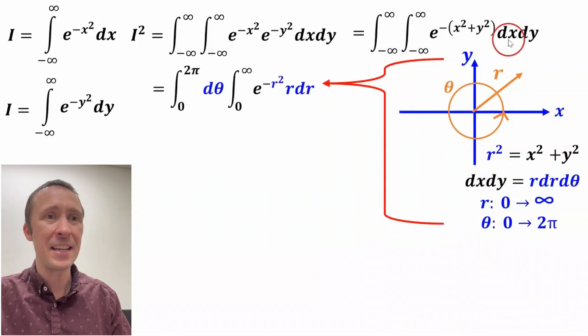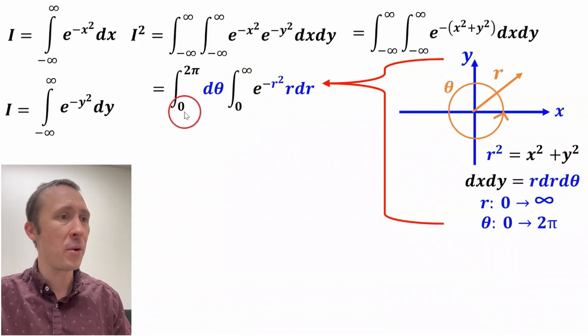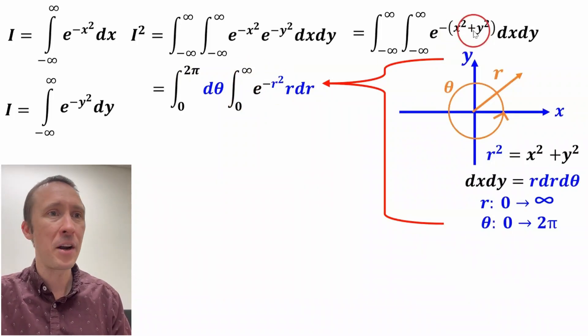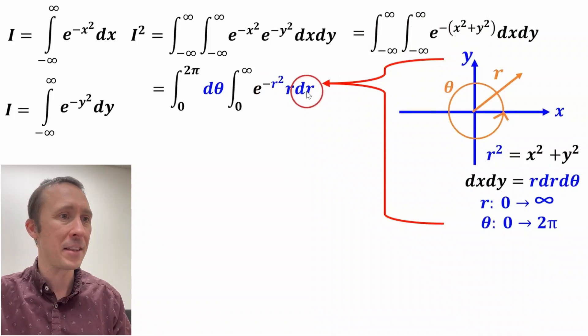So if we rewrite this integral of x and y in terms of theta and r, this is what we get. Theta is going from zero to 2π and r is going from zero to infinity. And rather than x squared plus y squared in the exponent here, we have an r squared.